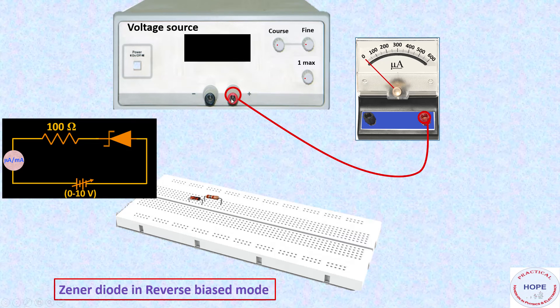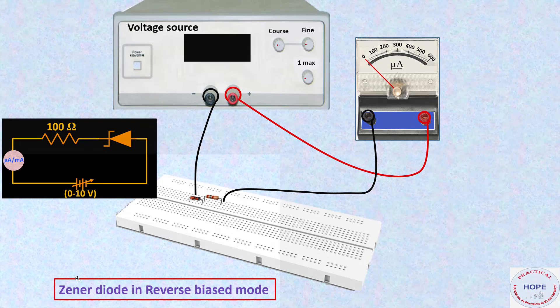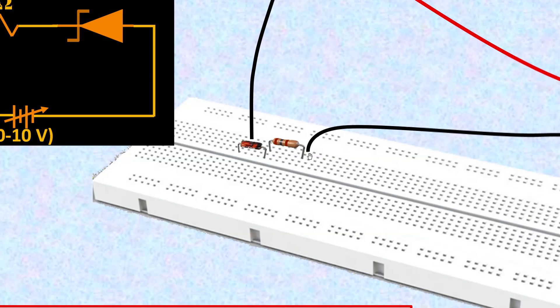The positive terminal of the battery is connected to positive terminal of the micrometer. Negative terminal of the micrometer is connected to one end of the 100 ohm resistor. The other end of the resistor is connected to N of the Zener. And P side of the Zener is connected to negative terminal of the voltage source. We can zoom and see these connections.